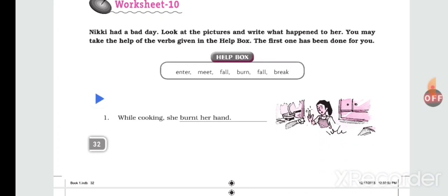Now let us do worksheet 10. Nikki had a bad day. Look at the pictures and write what happened to her. You may take the help of the verbs given in the help box: meet, fall, burn, fall, break.